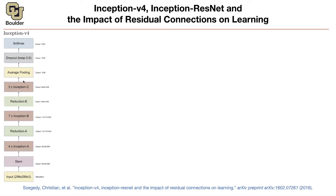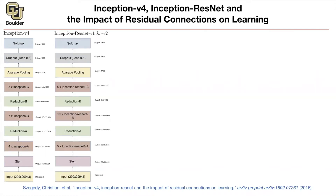From 17 you go to 8 after the next reduction. Then you have three Inception C blocks, then average pooling — a global average pooling — which takes an average of those 64 numbers per channel, giving you an output of 1536. Then you have a dropout keeping 80% of your connections, and then a softmax. So there are a few things I need to explain: what is Inception, what is Reduction, and what is Stem.